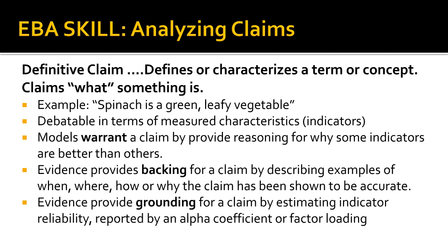If you showed them every item in a produce section of the grocery store, what would be the relation between their answers to those questions and the correct identification of each produce item? Would spinach be the only item correctly identified? To establish a definitive claim, we must begin with a model that specifies the indicators. The reliability estimates of each factor are found through an evidence analysis producing statistics called factor loadings for individual indicators, or the Cronbach-alpha coefficient for a group of indicators. We will be reviewing these statistics in a future tutorial.